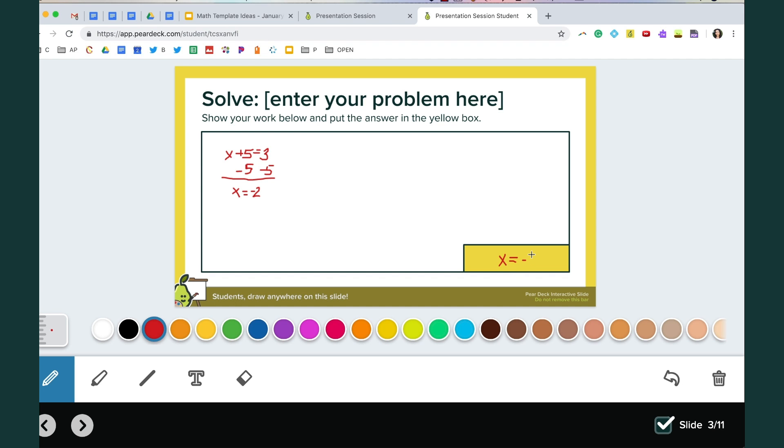All students could put their process of solving and that would be a way to just discuss all the different answers that the class gets. If there are some wrong answers everything is displayed anonymously through the projector view and so this is a great way to discuss the correct answers and the incorrect answers.